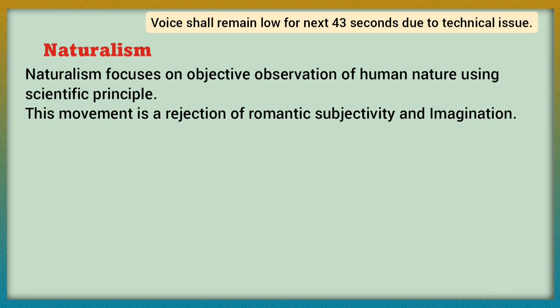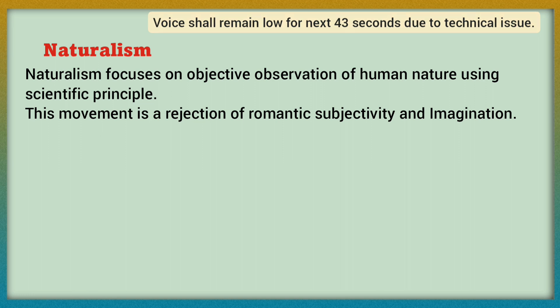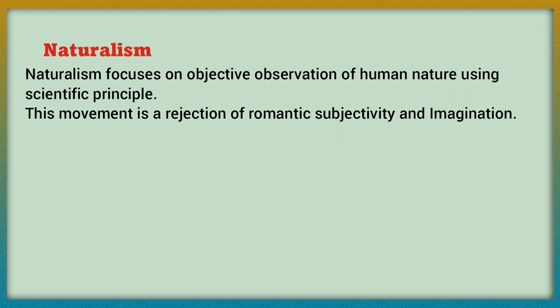Naturalism was a literary movement that focused on the objective and direct observation of human nature using scientific principles. Naturalism also observed how environmental, social, and hereditary factors impacted human nature. Naturalists rejected movements such as romanticism, which emphasized subjectivity, the individual, and imagination.